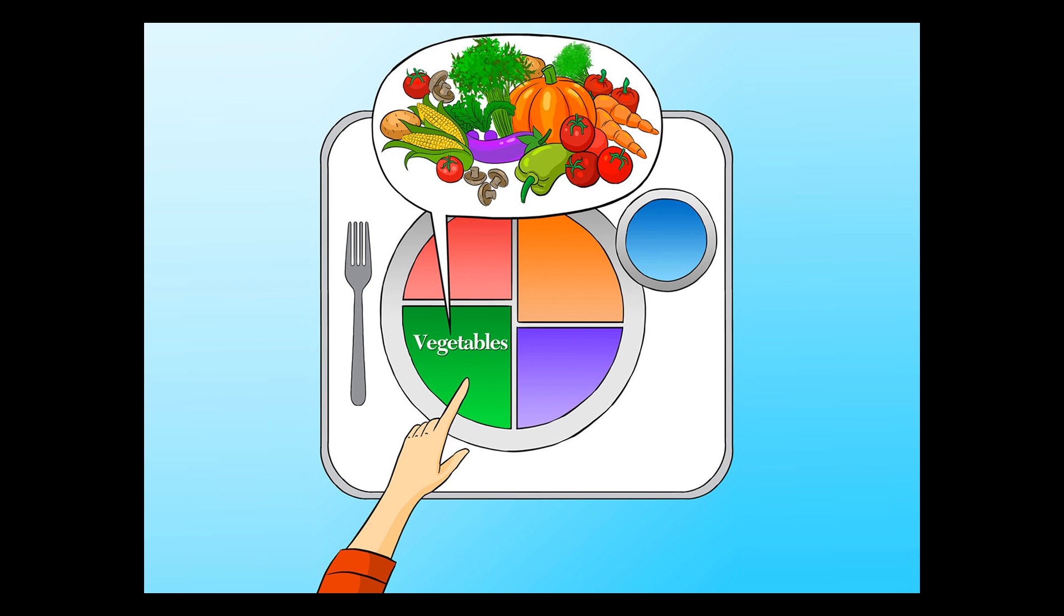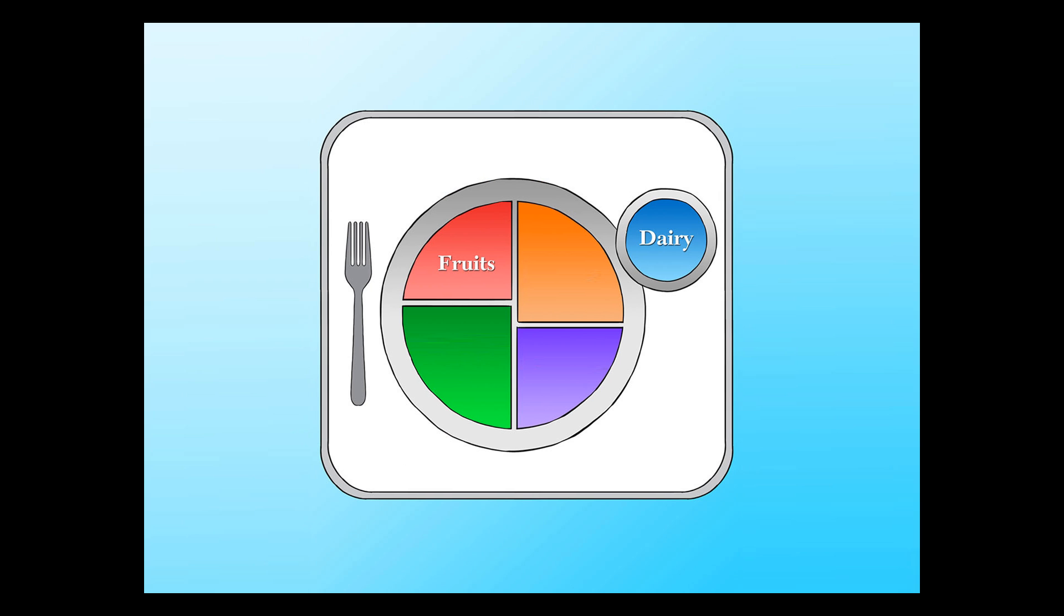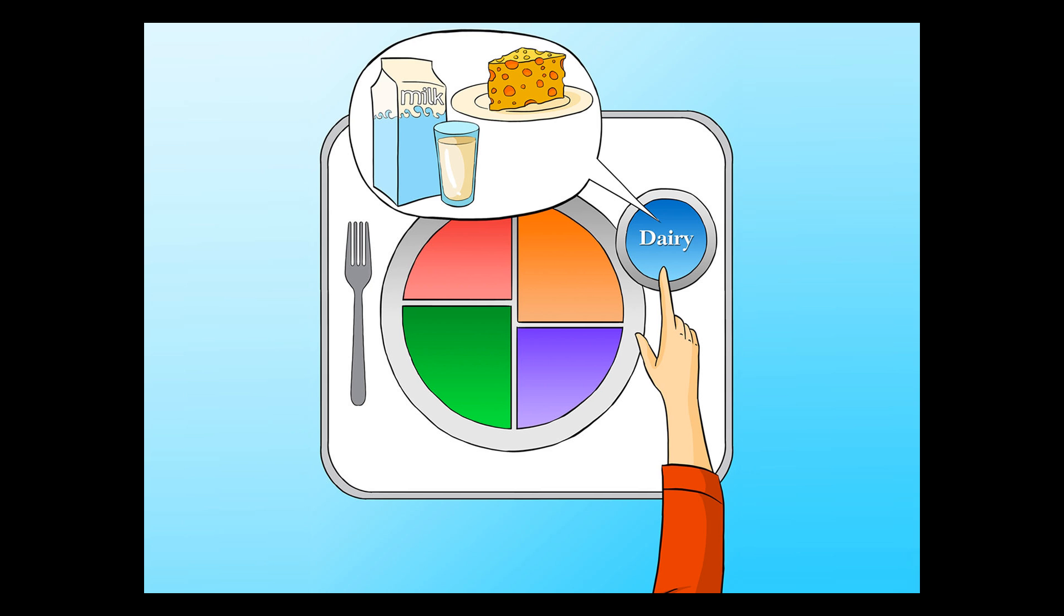Now there are only two parts left. The red part, which is for fruits, and the blue part, which is for dairy. Mommy tells me dairy products are milk and things made from milk, like cheese. Since I like to have cheese on my turkey burgers, we've already got dairy.